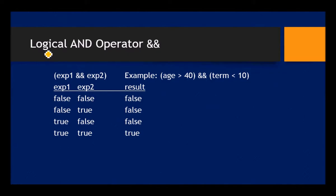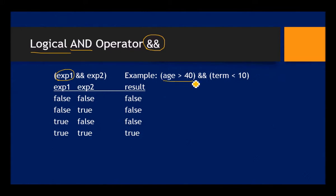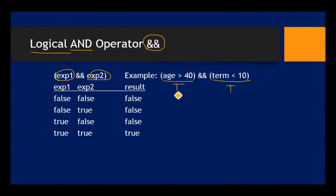In addition to relational operators, we also have logical operators. Logical AND uses two ampersands (&&). So we have EXP1 — a relational expression that results in true or false, for example 'age greater than 40' — and another expression such as 'term less than 10'. After both are evaluated, logical AND combines the two results. Here's the truth table: you only get true when both input terms are true.